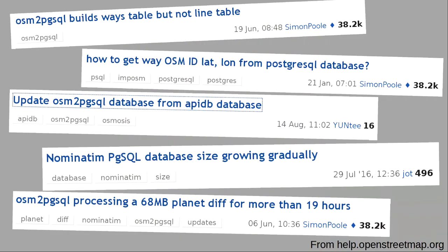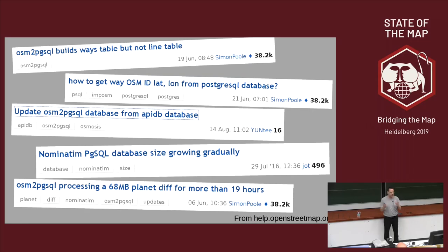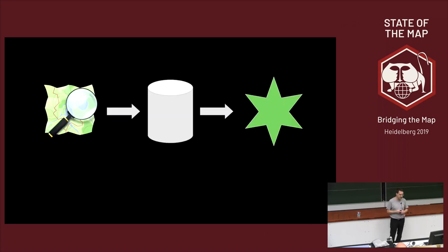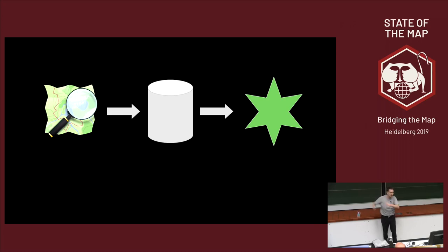This talk was also prompted by seeing a lot of questions on help.openstreetmap.org, on mailing lists, and so on. People ask questions that have something to do with Postgres—they use software to import something and it doesn't work with other software, and I can see there are lots of misconceptions about what it can do. This talk is basically about: you have OpenStreetMap data, you put it into Postgres, you do things with it, you get the data out and do something with it.